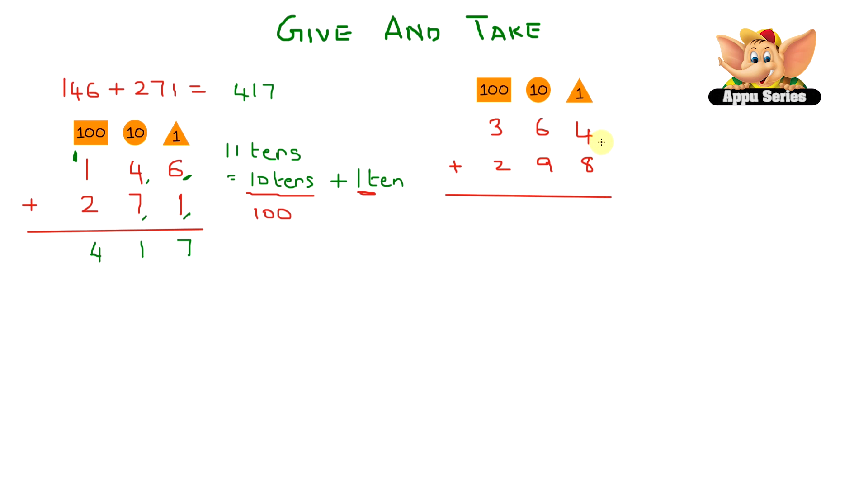So let's count the ones first. We have 8 plus 4 equals 12. So we have 12 ones. 12 equals 10 plus 2. So this one ten is carried over to the tens place and we write down the number 2 here in the ones place.